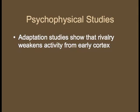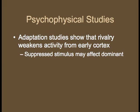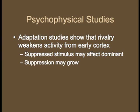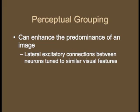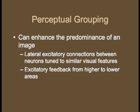Psychophysical studies are an important method of examining rivalry and provide important data as well. For example, adaptation studies looking at orientation and motion after-effects found that these are weakened by binocular rivalry. Therefore, rivalry weakens activity from the early cortex. However, the signal from the suppressed image is not completely destroyed. The suppressed image may contribute to characteristics of the dominant image, such as perceived motion direction, flicker rate, and orientation. Additionally, suppression may increase along the visual pathway. Perceptual grouping likely occurs via excitatory connections between neurons representing different regions of the visual field, which can enhance the predominance of an image. The authors speculate that grouping occurs between neurons sharing common visual features, and that excitatory connections may be made laterally or feed back from higher regions.